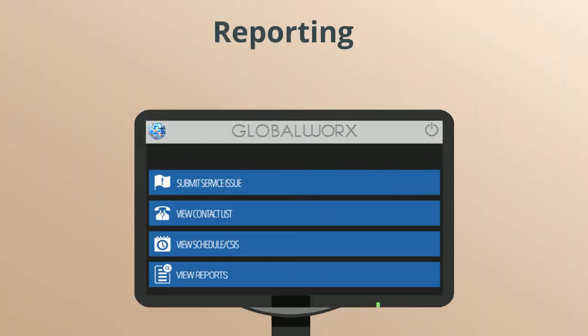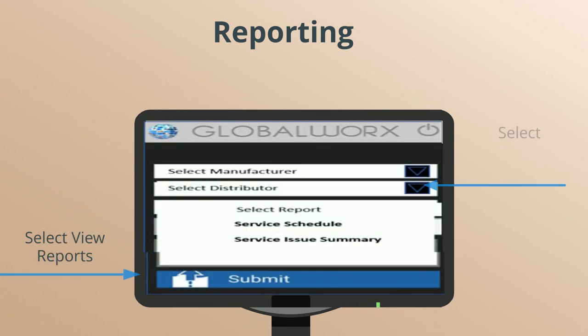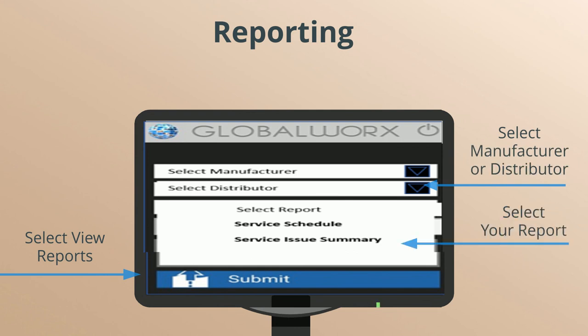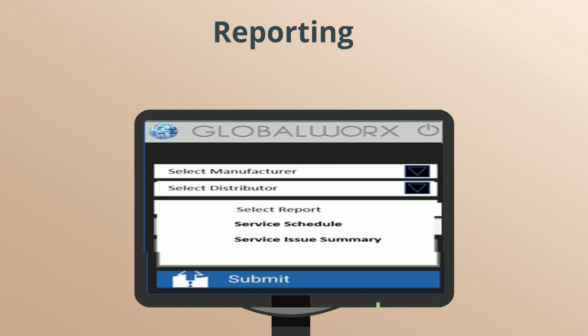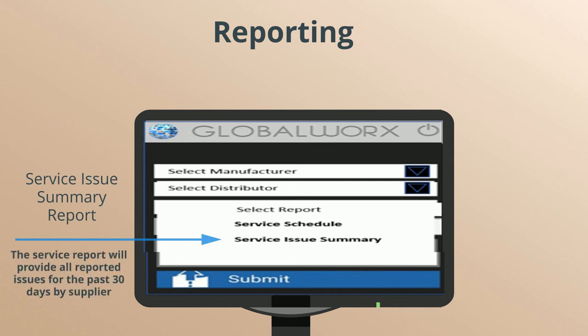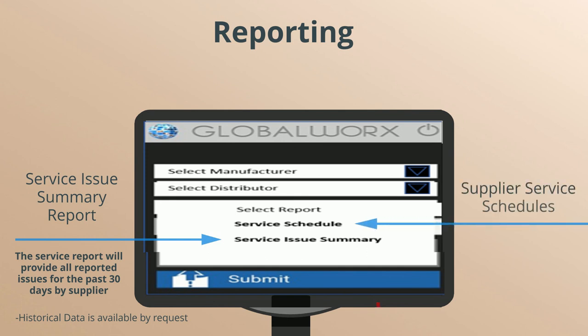To access reporting, select Reporting in the menu option, then select View Reports, select Manufacturer or Distributor, and select Report. There are two reports that can be run under the Reporting menu. The Service Issue Summary Report will provide all reported issues for the past 30 days by supplier. Supplier Service Schedules provide a weekly schedule for delivery and merchandising by supplier in a printable view mode.